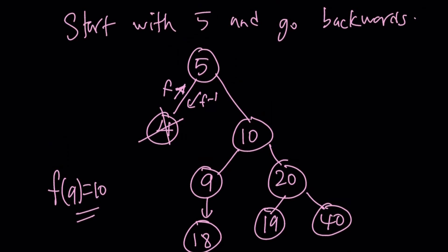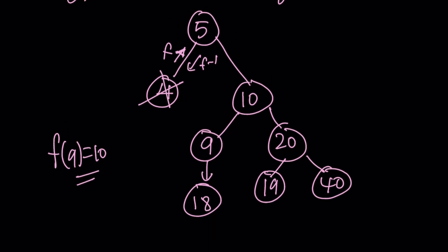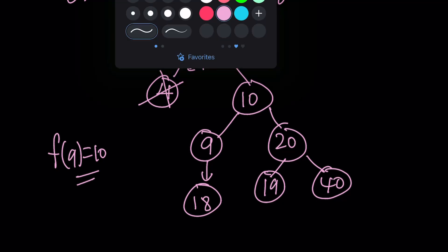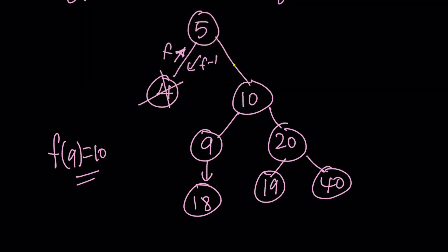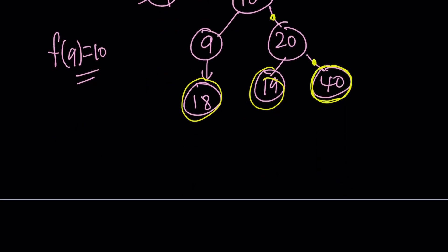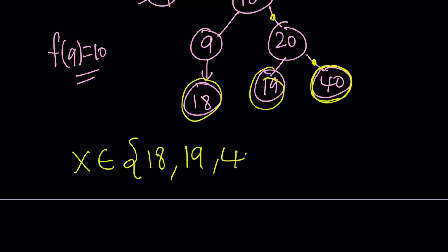We were supposed to go three steps backwards. Step 1, step 2, step 3. So 40 was obtained by applying f inverse three times, and the same goes for 18 and 19. Which means here are the solutions: x is an element of the set {18, 19, 40}. In other words, we have three solutions.